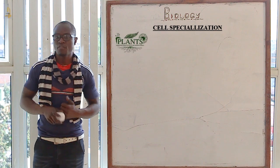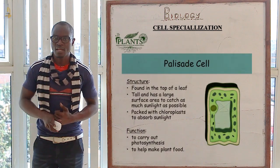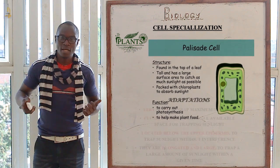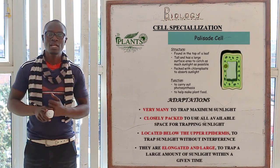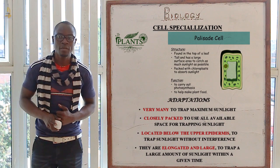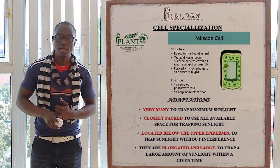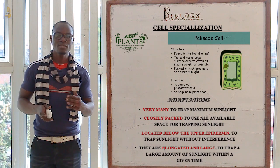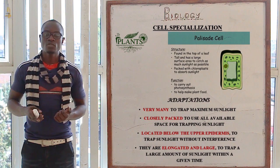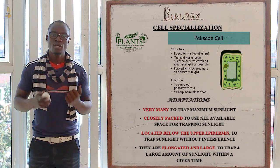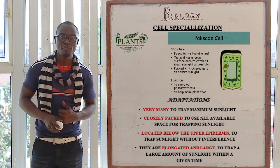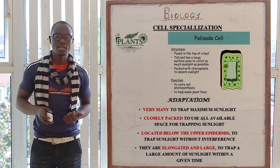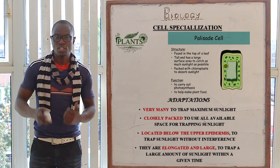Let's look at the specialized plant cells. The first plant cell we have is the palisade cell. The palisade cells have chloroplasts for photosynthesis. Their adaptations are: they are very many and closely packed; they are located below the upper epidermis so that they can absorb maximum sunlight since sun rays always reach the upper parts of the leaf; and they are elongated and very large to be able to house a large number of chloroplasts.